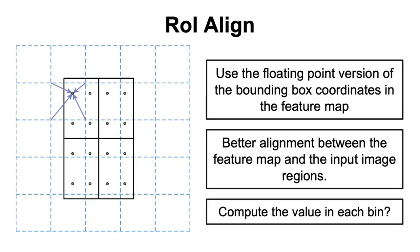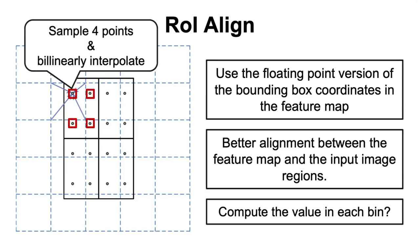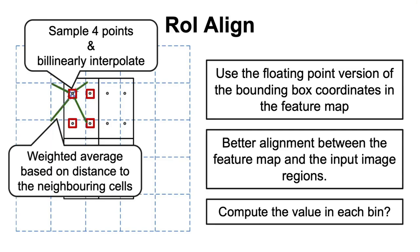However, by doing this, it's not so straightforward how we can use the values inside the bounding box anymore, since each bin may only partially contain a cell in the feature map. So what we do instead is to sample four points in each bin and compute the value of each point by using bilinear interpolation. If you are not familiar with this concept, what the bilinear interpolation does, in a nutshell, is to take the weighted average based on the distance from the sample point to the closer neighboring cells.